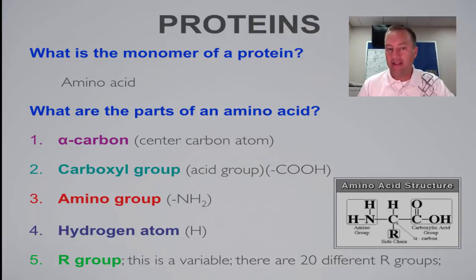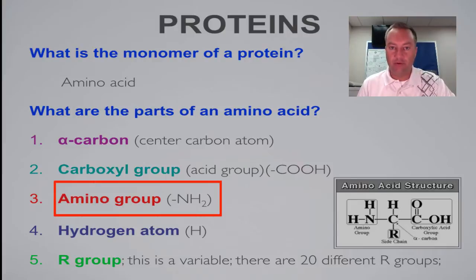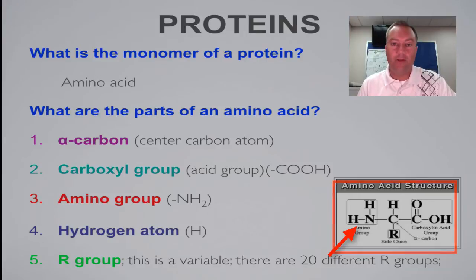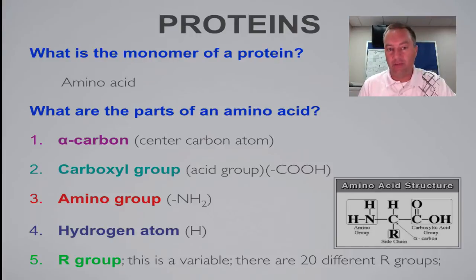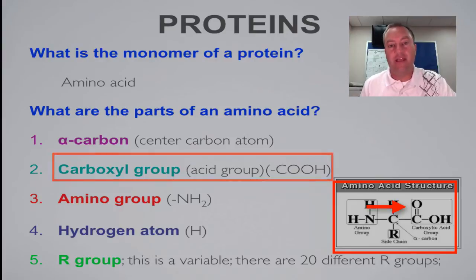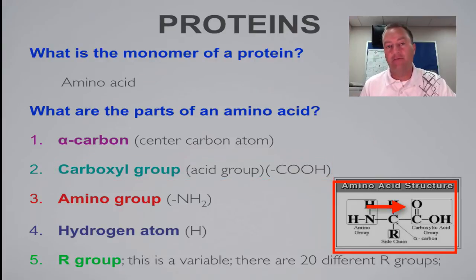Now, the name amino acid tells you what two of the functional groups are. The first functional group would be the amino group, and I typically draw that on the left-hand side, as you can see in the picture down there in the corner. That is an NH2. Remember, an amino group behaves like a base, so that side of the molecule is going to be basic. On the other side, the right-hand side where I typically draw this, is the carboxyl group. Remember, the carboxyl functional group acts as an acid. So that's where the name amino acid comes from.